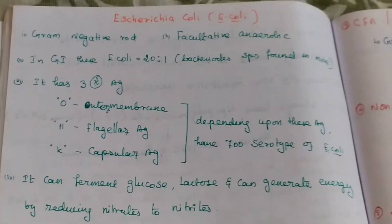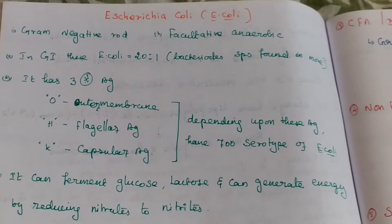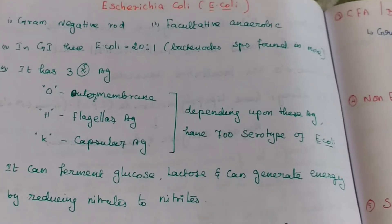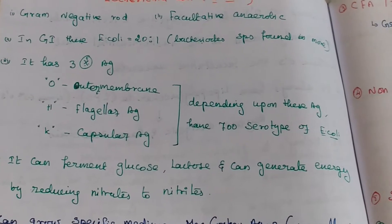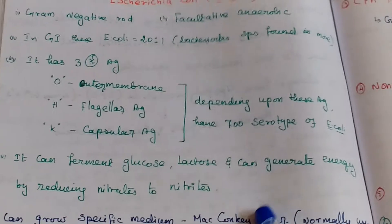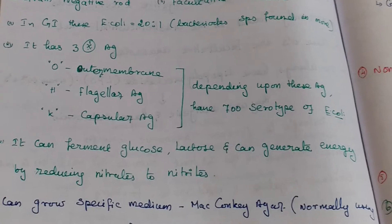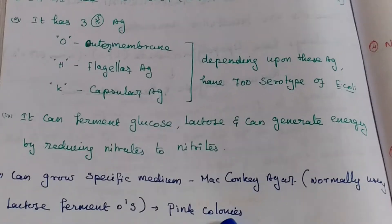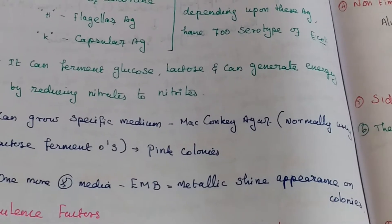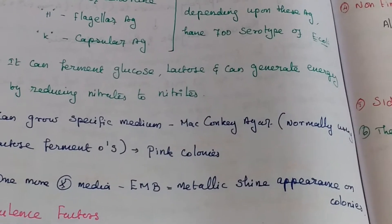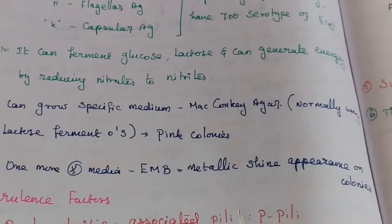To summarize morphology: E. coli is a gram-negative rod, facultative anaerobic, mainly present in the gastrointestinal tract in maximum numbers. It has 3 different types of antigens — O antigen, H antigen, and K antigen — giving rise to 700 serotypes. It can ferment glucose and lactose, and can grow on MacConkey agar (producing pink color) and EMB (producing metallic shine appearance).